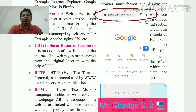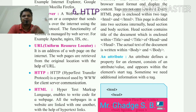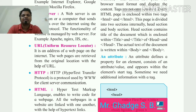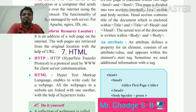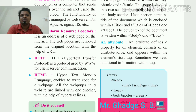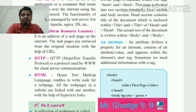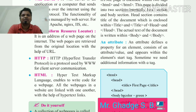Next is HTTP — Hypertext Transfer Protocol — used by the WWW for client-server communication. The last component is HTML — Hypertext Markup Language — which enables writing code for a web page. All web pages in a website are linked with one another with the help of hypertext links. HTML is a markup language used to build static pages, and you can also make dynamic and interactive pages with the help of scripting, which we will discuss in the next lecture.